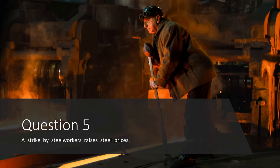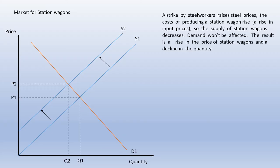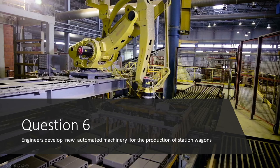Question five: a strike by steel workers raises steel prices. Steel is an input into station wagons, so an increase in the price of steel raises the cost of producing a station wagon. This is a rise in input prices, so the supply of station wagons decreases; demand is unaffected. The result is a rise in the price of station wagons and a decline in quantity — the supply curve shifts left, and we have a new equilibrium at a higher price and lower quantity.